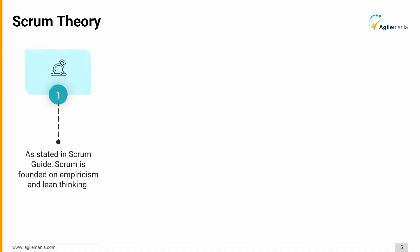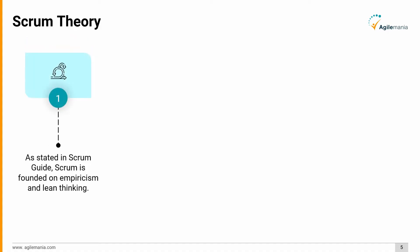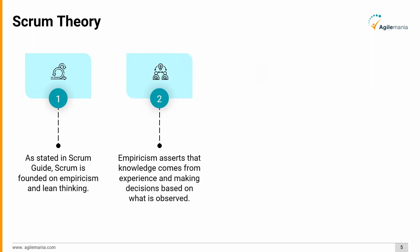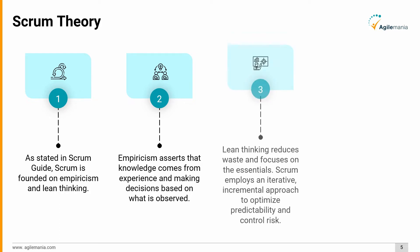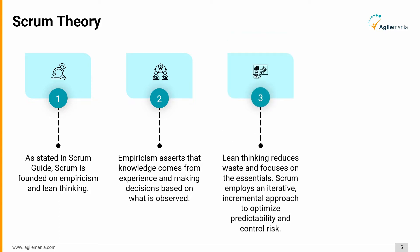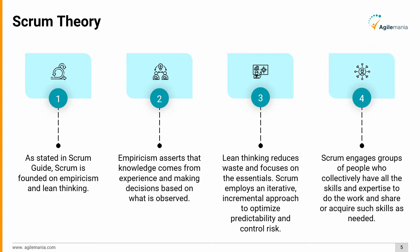As stated in the Scrum Guide, Scrum is founded on empiricism and lean thinking. Empiricism asserts that knowledge comes from experience and making decisions based on what is observed. Lean thinking reduces waste and focuses on the essentials.